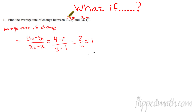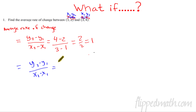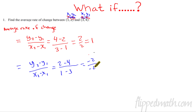Let's play the 'what if' game. Students always ask: how do I know which point is x1,y1 and which is x2,y2? What if we switched them? We'd get (2 minus 4) over (1 minus 3), which is negative 2 over negative 2 — still equals 1. The negatives cancel. So it doesn't matter which point is x1,y1 or x2,y2, as long as the coordinates match up within each point.